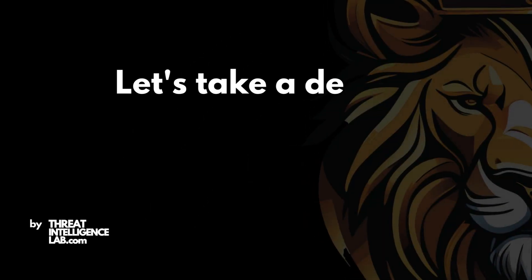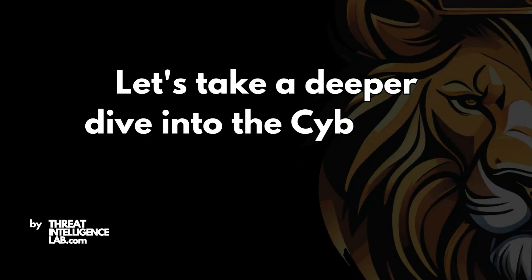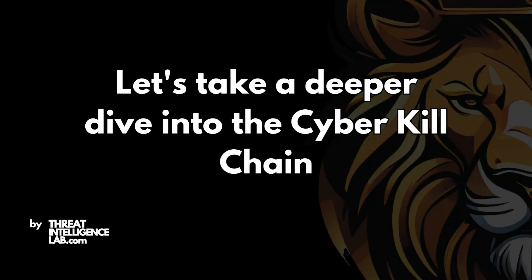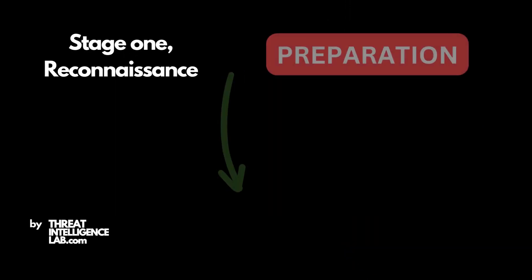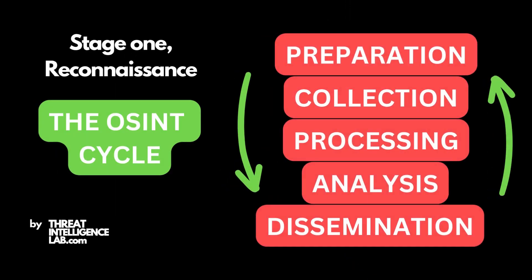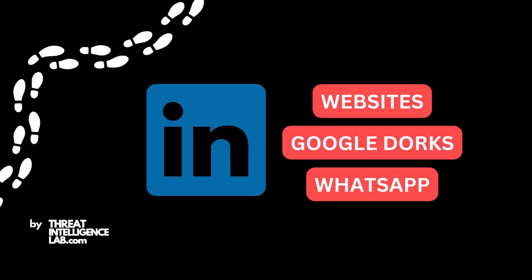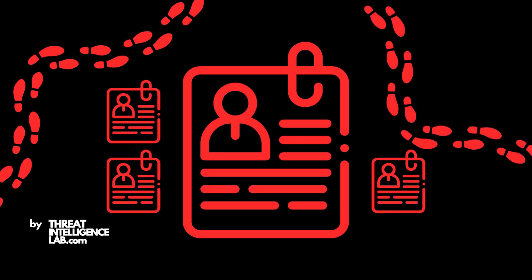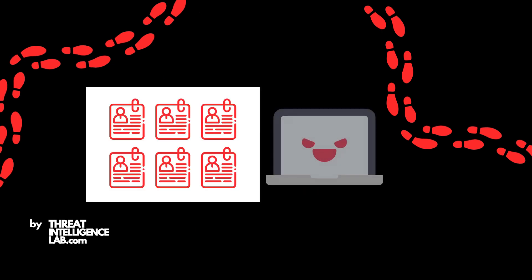Let's take a deeper dive into the cyber kill chain with detailed realistic examples. Stage 1: Reconnaissance. Imagine a hacker conducting open source intelligence gathering. They trawl through the target company's digital footprint — websites, social media, public records — compiling a dossier of employee names, email addresses, and system information. This data forms the backbone of their targeted attack strategy.